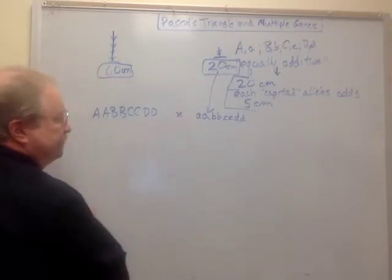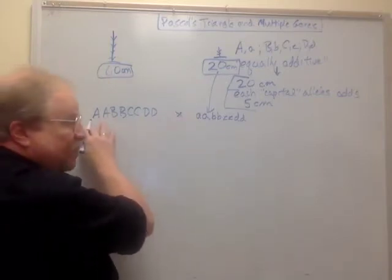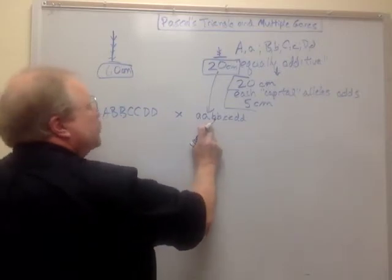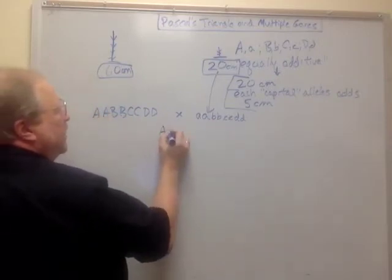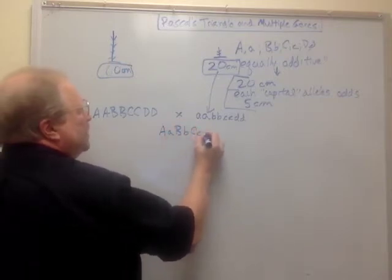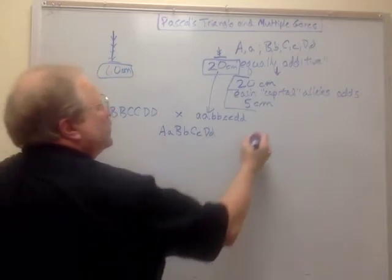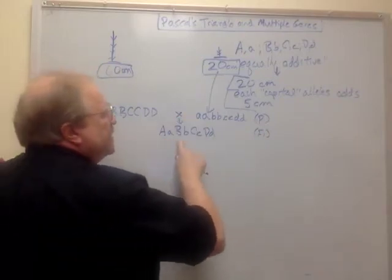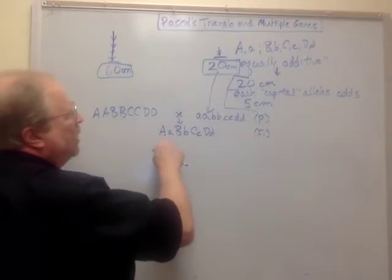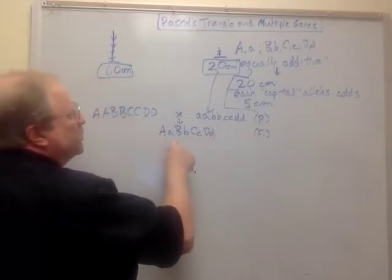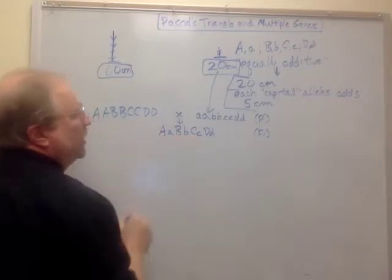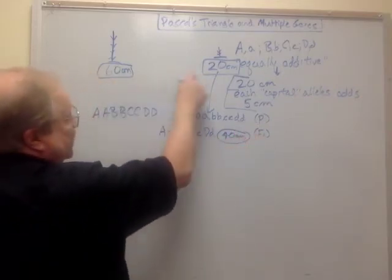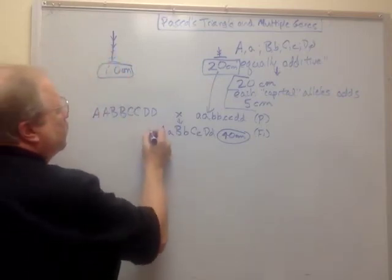What would happen if we crossed two of these? This would be a simple tetrahybrid cross. The tall parent contributes a big A, big B, big C, big D allele, and the short parent contributes little a, little b, little c, little d. We get big A little a, big B little b, big C little c, big D little d — that's our P generation producing our F1 generation. This F1 individual has a base height of 20 plus 5 centimeters for each of its 4 capital letters — 5, 10, 15, 20 — so this plant is going to be 40 centimeters tall, right in between 60 and 20. Now what if we cross two of those F1 individuals?